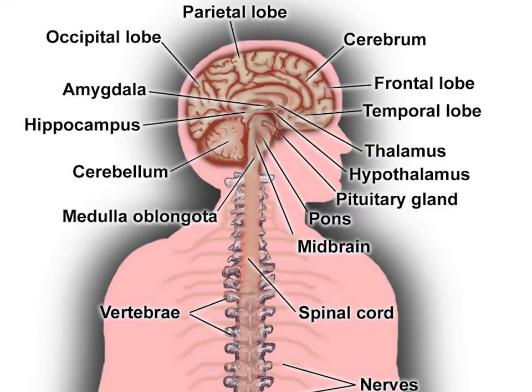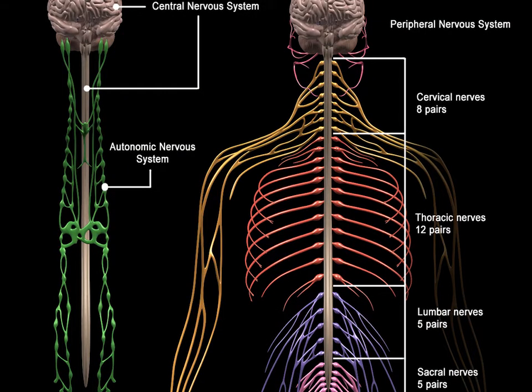The visceral part, also known as the autonomic nervous system, contains neurons that innervate the internal organs, blood vessels, and glands. The autonomic nervous system itself consists of two parts: the sympathetic nervous system and the parasympathetic nervous system.